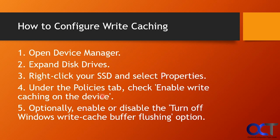So how do we configure it? We're going to do this after we go through these slides. You go to Device Manager, find your disk drive, right-click on it, and choose Properties. Then you'll have a Policies tab, and you can check the box for Enable Write Caching on the device. You'll also see an option to turn off the Windows Write Cache Buffer Flushing option, which we'll talk about when we get there.